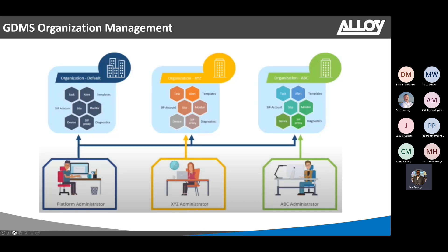GDMS allows you to create multiple organizations and assign specific users to separate management. For example, if you are a managed service provider with hundreds of different customers and organizations, you can give their local administrators access to GDMS so they can manage their own organization and all the sites and SIP trunks under it. As you can see in this diagram, the platform administrator will have access to all organizations in GDMS, but the organization administrators will only have access to their own organization, all the sites, and SIP trunks associated with that organization.